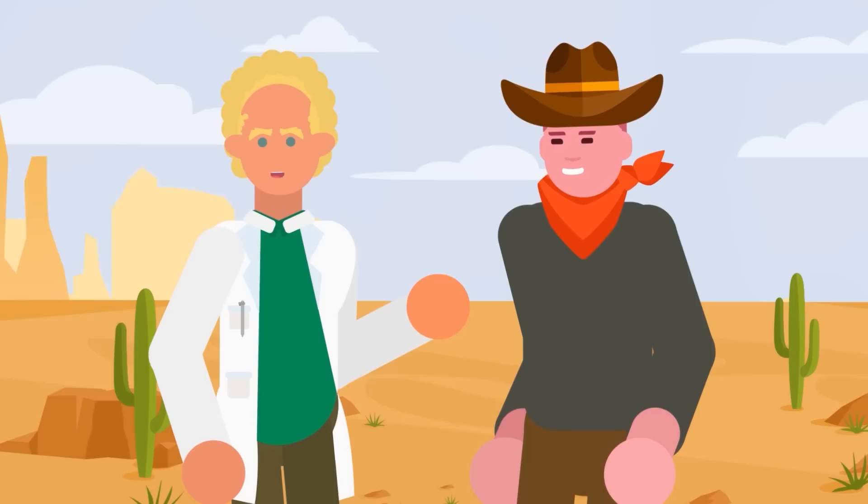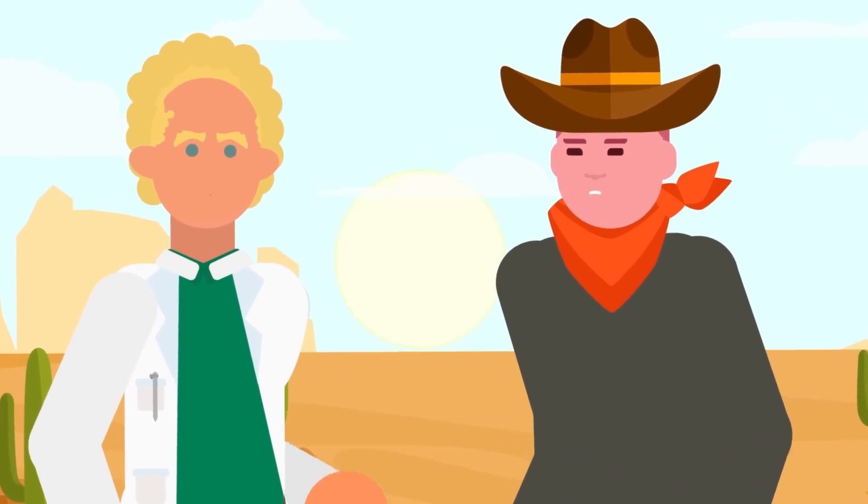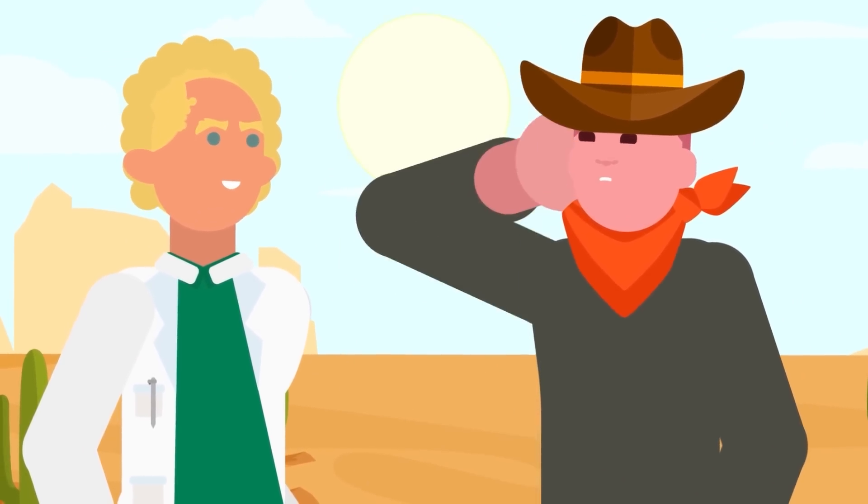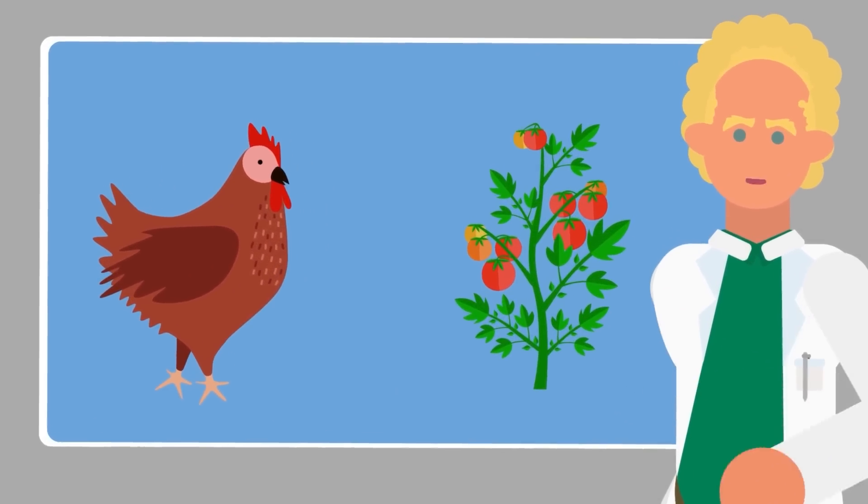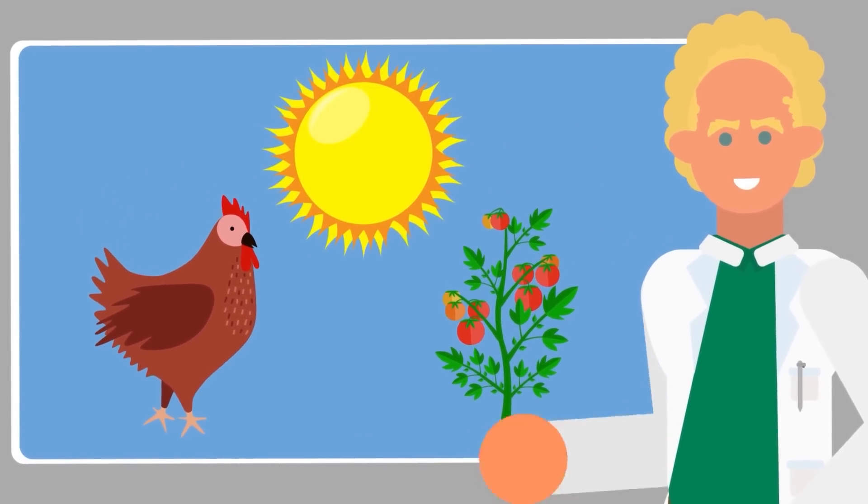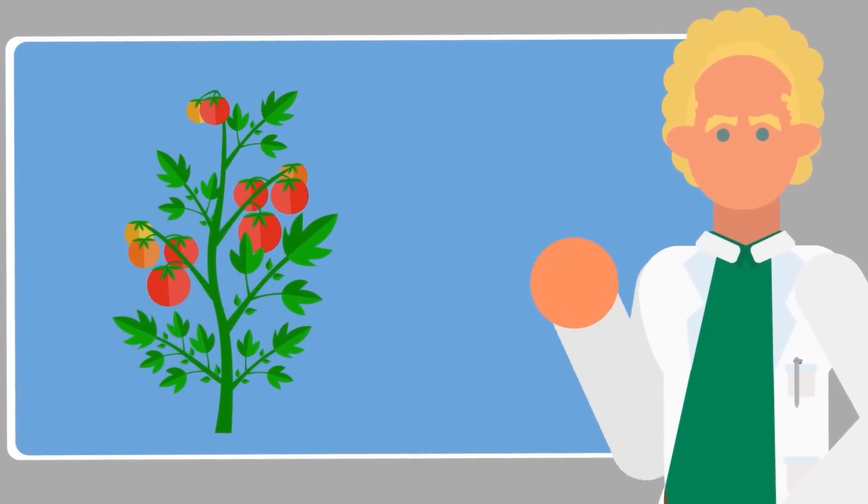Well, Texans might not like it, but the truth is all life on Earth is solar powered. Yes, even you. The food you eat either ate food that got its energy from the sun, or was food that got its energy from the sun. For the kids in the cheap seats, we're talking about plants here.